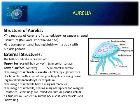That is the structure of Aurelia. Aurelia has a medusa-like structure. Medusa means a flattened, bowl-shaped or umbrella-shaped structure. It is transparent, having a bluish-white body with pinkish gonads. The body is divided into two specific regions: the upper surface and lower surface. The upper surface is slightly convex — that is the ex-umbrellar surface — and the lower surface is concave — that is the sub-umbrellar surface.